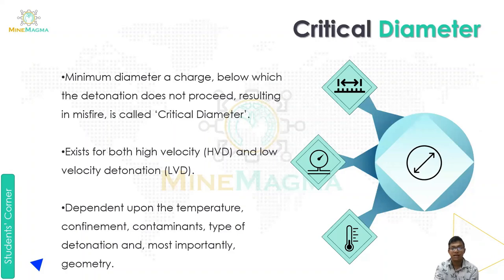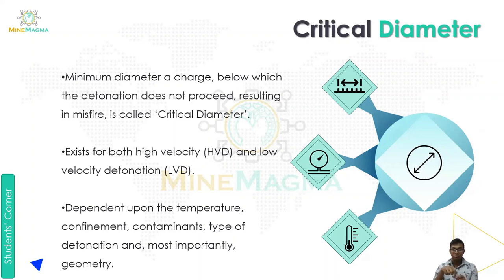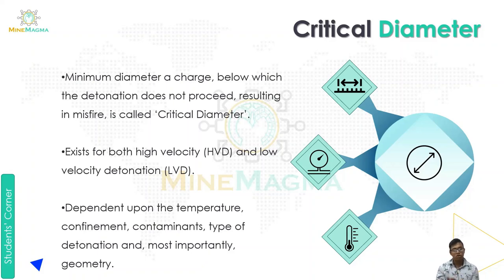Next is critical diameter. Critical diameter is the minimum diameter of a charge below which detonation does not proceed, resulting in a misfire. It exists for both high velocity detonation and low velocity detonation. For high velocity detonation we are going to have very heavy blasting, and critical diameter matters there. Critical diameter also matters for low velocity detonation.